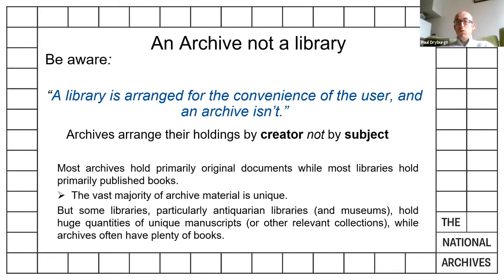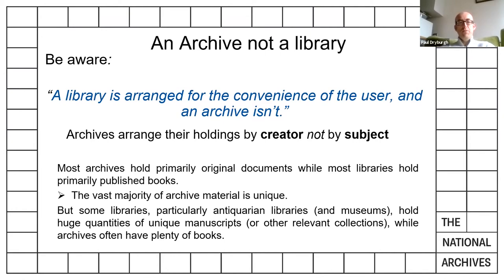Most archives hold primarily original documents where there is only one of that document, though printed pamphlets in the early modern period can be held differently. It's the context of each collection which adds value and interest even to a copy. Most libraries hold primarily printed books. So 99.9% of archive material is unique, but many libraries — particularly antiquarian libraries, university libraries, and museums — also hold large quantities of unique manuscripts or other relevant collections.